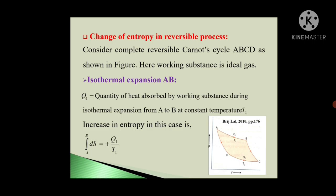First step, Isothermal Expansion A to B. So here, Q1 is the quantity of heat absorbed by working substance during this isothermal expansion from A to B at constant temperature T1. It is shown in the diagram. Now here from A to B expansion, it is Isothermal Expansion. Here, increase in entropy in this case is integration A to B dS equal to plus Q1 upon T1.